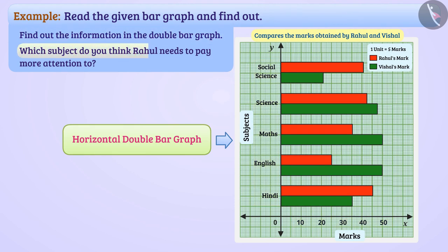Which subject do you think Rahul needs to pay more attention to? Rahul's marks are denoted by red bars. The shortest length of all red bars is drawn for English subject. This means that out of all the marks of Rahul's subject, he got lowest marks in English. Hence, Rahul have to focus more on English subject.